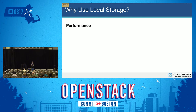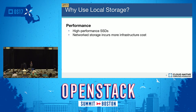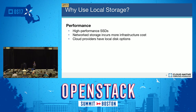The first benefit is performance. High-performance SSDs are becoming more important to scaling critical applications. To get that same performance through network storage requires more infrastructure — supporting networking switches and the networking pipeline to funnel data back and forth between all the nodes. Cloud providers also have local disk options where you can access a physical disk in your VM instance, and typically these disks have better performance than the remote disk versions.